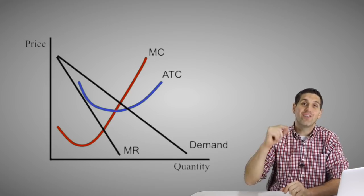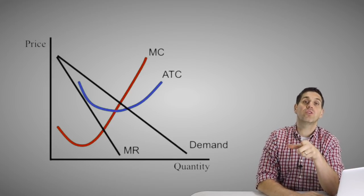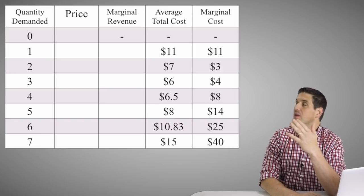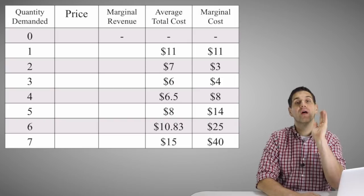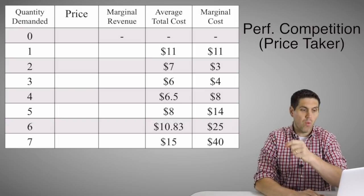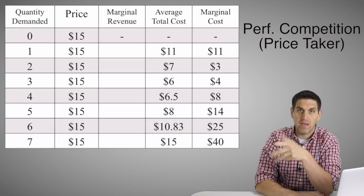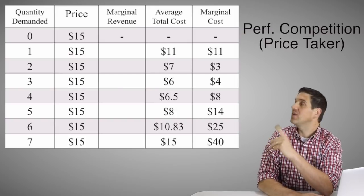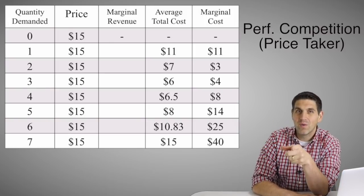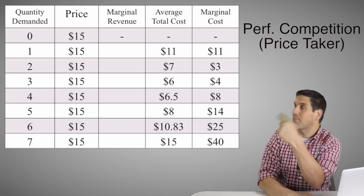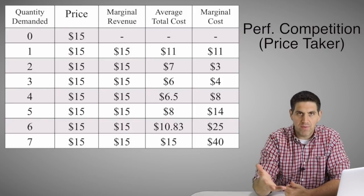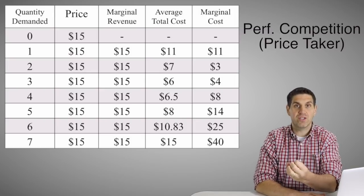Let's go ahead and talk about the revenue and do some calculations. Instead of talking about a graph, let's talk about the chart. I've got the quantity demanded, the average total cost, and the marginal cost. The price depends on what type of market structure this is. For example, if this is a perfectly competitive firm and the market price is set at $15, then the price for every unit is $15 — the first, second, third unit. The price is always $15 because it's set by the market; it's a price taker. So the marginal revenue is also $15 — if I sell another unit for $15, I'm making another $15 of additional revenue.